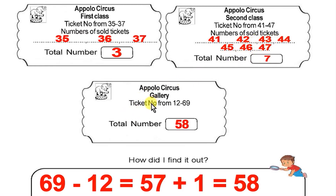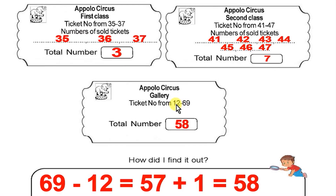Gallery ticket: 12 to 69. How many tickets? That is 58 tickets. 12 minus 7 is... so 58 tickets in the gallery.